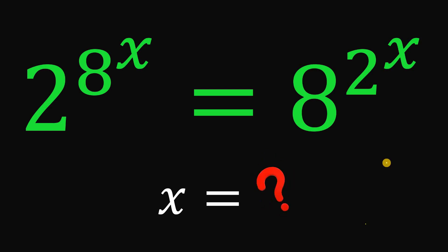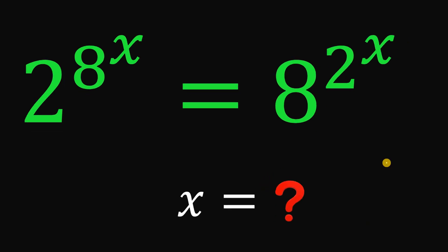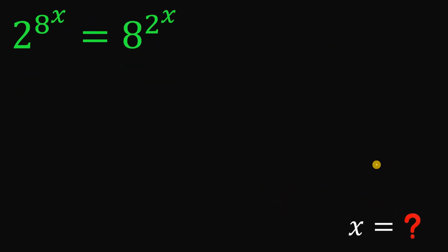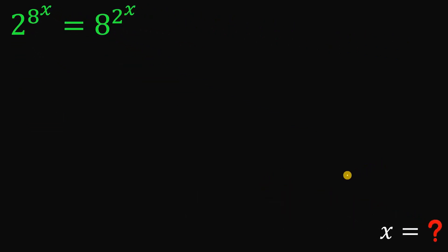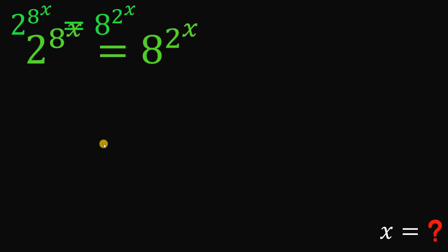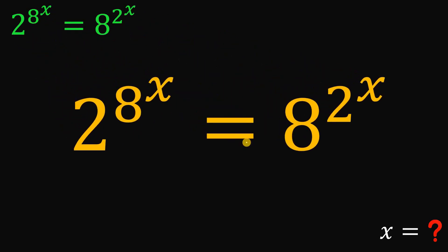Now suppose you paused this video — let's see if you got the correct answer. To answer this question, let's get the equation. We have 2 raised to 8 raised to x equals 8 raised to 2 raised to x. Since it is an exponential equation, what we're going to do is make the bases the same.